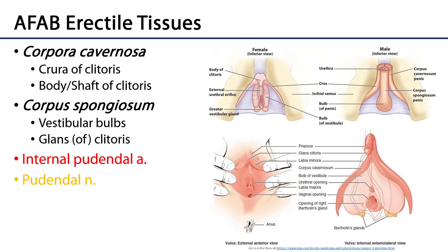Looking specifically at the erectile tissues participating in the clitoris: the crura of the clitoris, formed of the corpora cavernosa, come together along the midline and fuse to form the body or shaft of the clitoris. The corpus spongiosum forms the vestibular bulbs, which come together along the midline to cap off the body of the clitoris as the glans clitoris. So: corpora cavernosa form the crura and body of the clitoris, whereas corpus spongiosum forms the vestibular bulbs and glans clitoris.